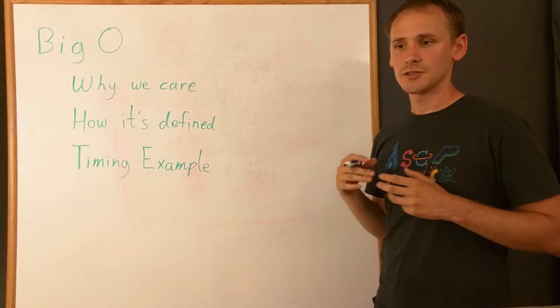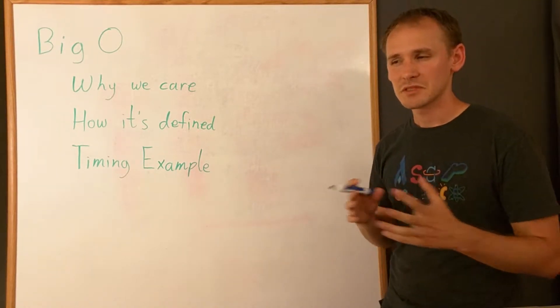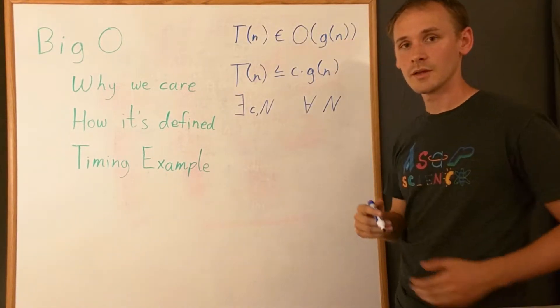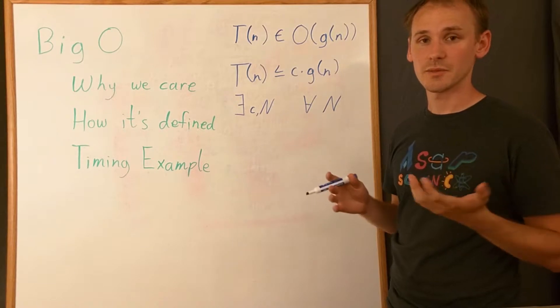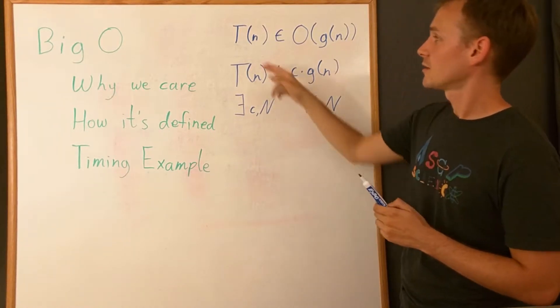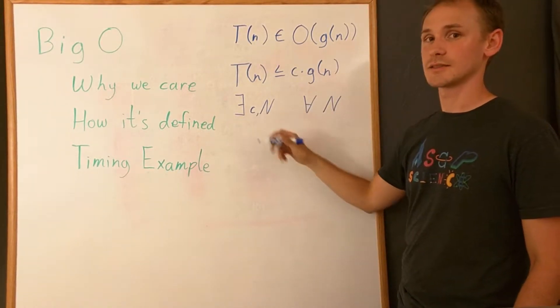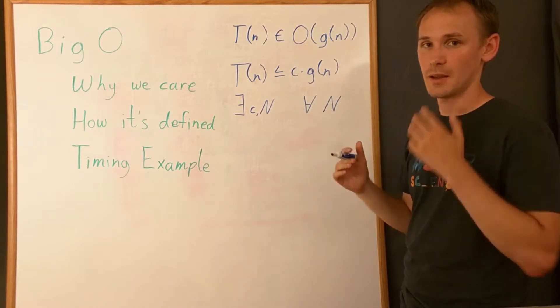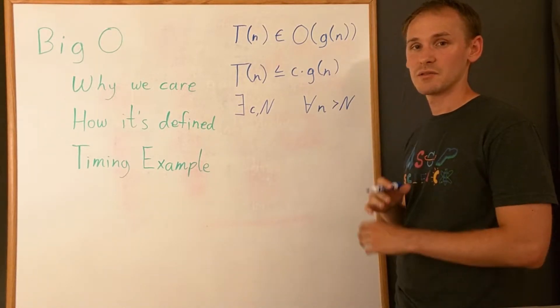It's common notation in programming to call the amount of time a function takes T(n), where n is the size of the input. In our searching example, n would just be the number of words that we have to look through. So the way that we say that the amount of time something takes is on the order of g(n), where g(n) can be any function like n or log base 2 of n, n squared, anything you can think of, is just to say that T(n) is O(g(n)). And all this means is that for some constant little c and big N, T(n) is less than or equal to that constant times g(n). And we also add in this extra bit that this is true for all little n greater than big N.